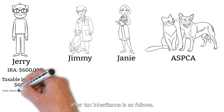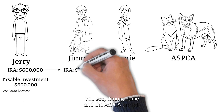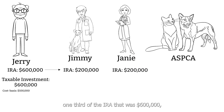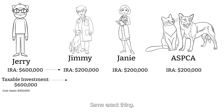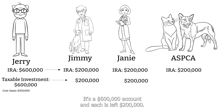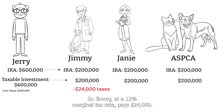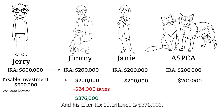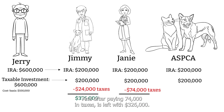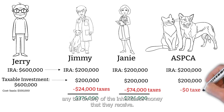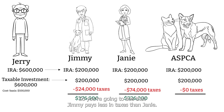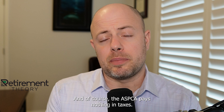Jerry passes away and each beneficiary's after-tax inheritance is as follows. Jimmy, Janie, and the ASPCA are each left one third of the IRA — $200,000 each — and one third of the taxable account — also $200,000 each. Jimmy, at a 12% marginal tax rate, pays $24,000 in tax on the IRA assets. Janie pays 37% tax on her $200,000 IRA share, paying $74,000 and netting $326,000. The ASPCA as a charitable organization pays no tax on any inheritance money received.